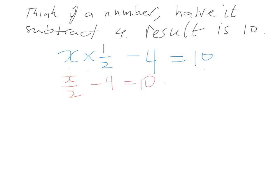Alright, let's solve this. So, we've got this minus 4. How do we get rid of minus 4? We add 4. So, X over 2 minus 4 plus 4 equals 10. What we do to one side, we've got to do to the other side, so we're going to put a plus 4 over there as well.